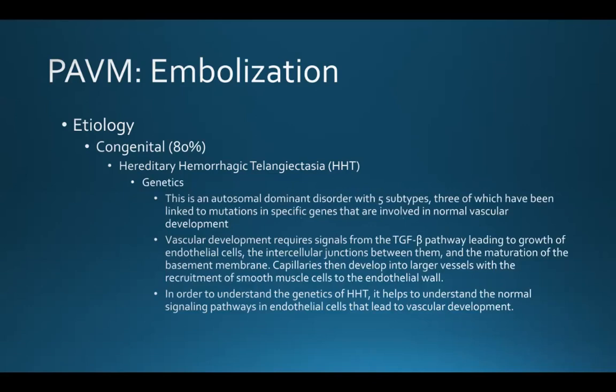HHT is an autosomal dominant genetic disorder with five subtypes, three of which have been linked to mutations in specific genes involved in normal vascular development. Vascular development requires signals from the TGF-beta pathway, leading to growth of endothelial cells, the intracellular junctions between them, and the maturation of the basement membrane.